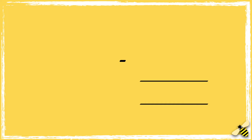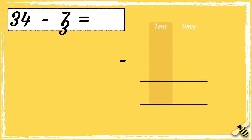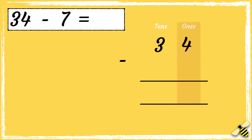Let's have a look at another example. Here is the number sentence: 34 take away seven. Remember to line your numbers up correctly, so we have the tens in one column and the ones in another column. The number 34 has three tens and four ones. The number seven has seven ones.